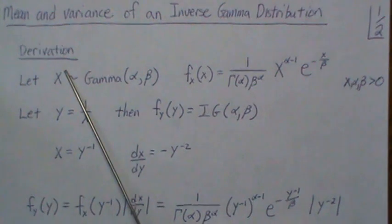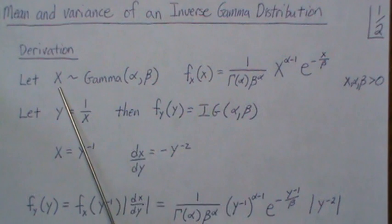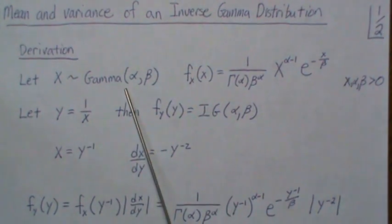First, the derivation. We assume that x is a gamma distribution, the random variable distributed as a gamma distribution.